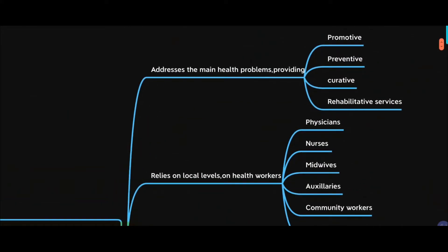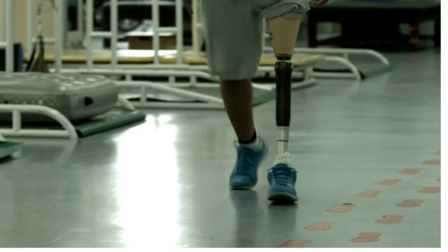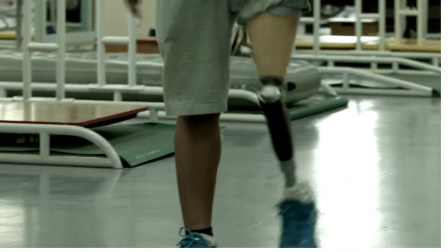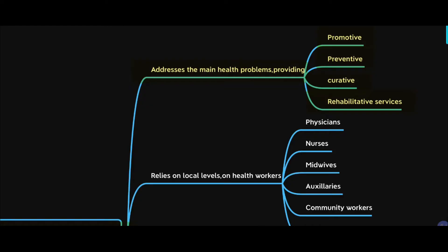Primary health care should address the main health problems by providing promotive, preventive, curative, as well as rehabilitative services. It should promote good health, prevent diseases from occurring, cure diseases that have occurred, and provide rehabilitative services. For example, if a person has suffered an illness or injury leading to loss of function — such as being unable to walk or eat — we should rehabilitate that patient to maximize their self-sufficiency.